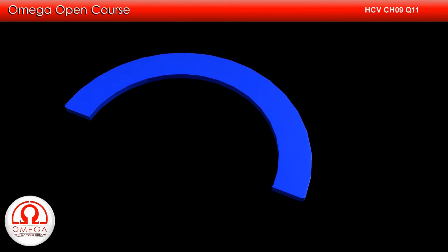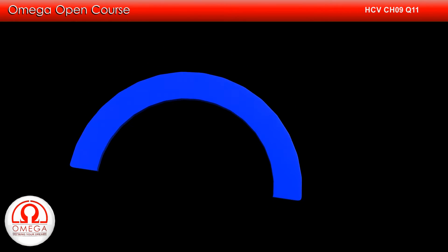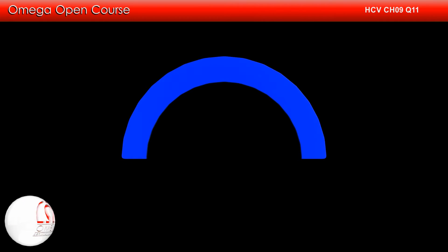So when the two disks are brought together, the negative density of the smaller disk cancels out the portion of the larger disk and we get our shape.